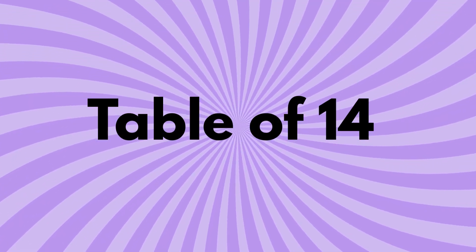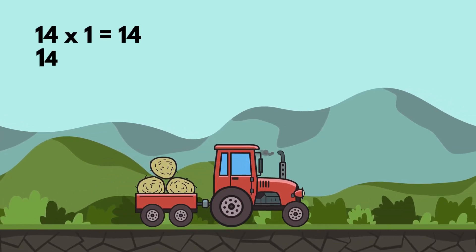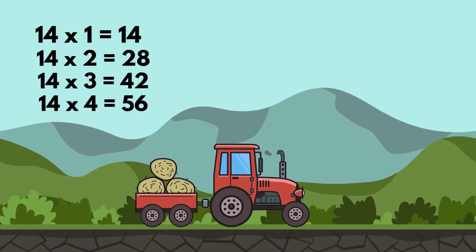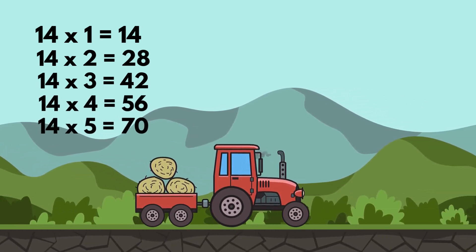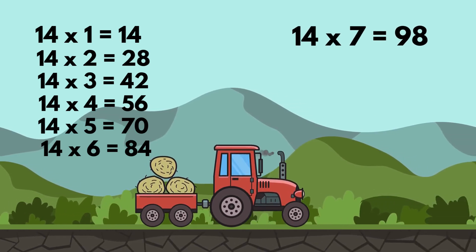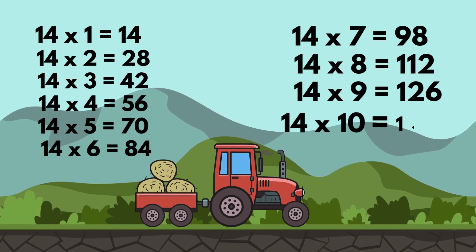Table of 14. 14 1's are 14, 14 2's are 28, 14 3's are 42, 14 4's are 56, 14 5's are 70, 14 6's are 84, 14 7's are 98, 14 8's are 112, 14 9's are 126, 14 10's are 140.